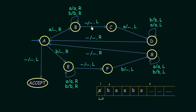When we encounter a blank symbol, we understand we have reached the rightmost portion of the string. We replace the blank with blank itself and move one step to the left. Now we are at the position of the last symbol, which is an A. In state C, if we get A, we replace that A with a blank and move to the left.